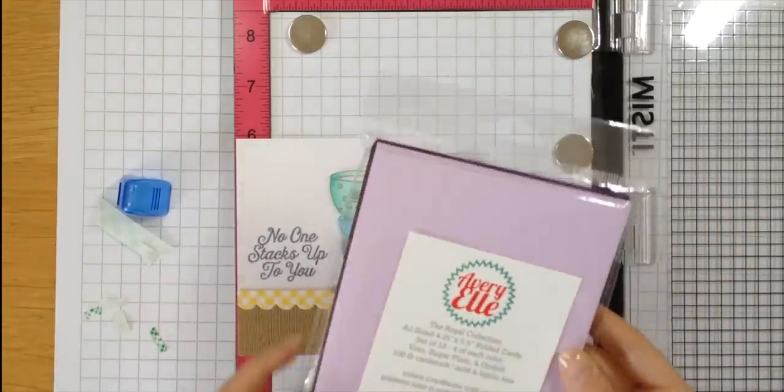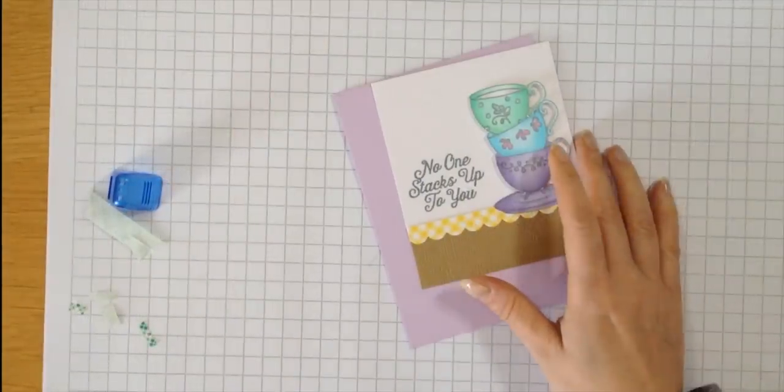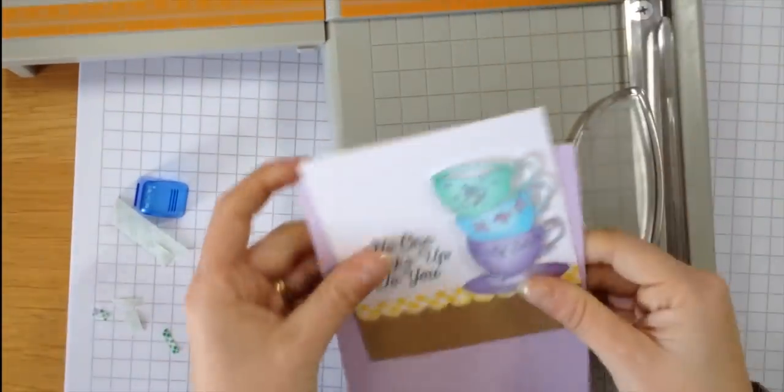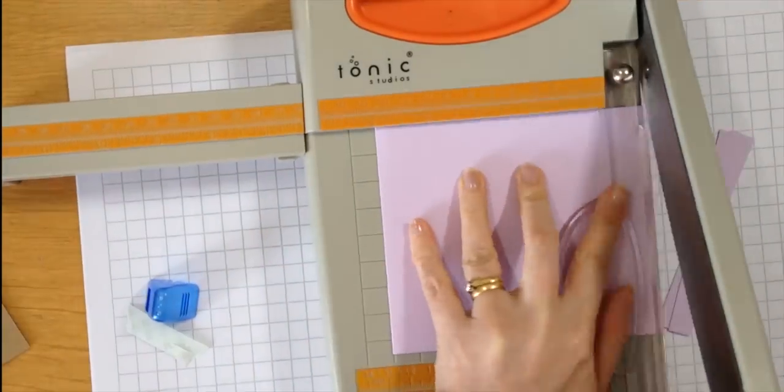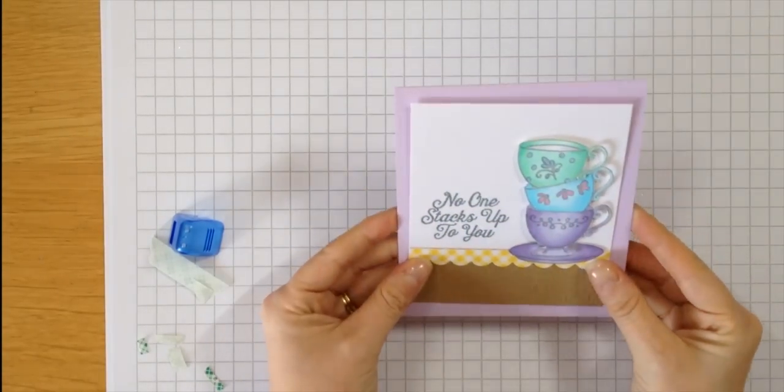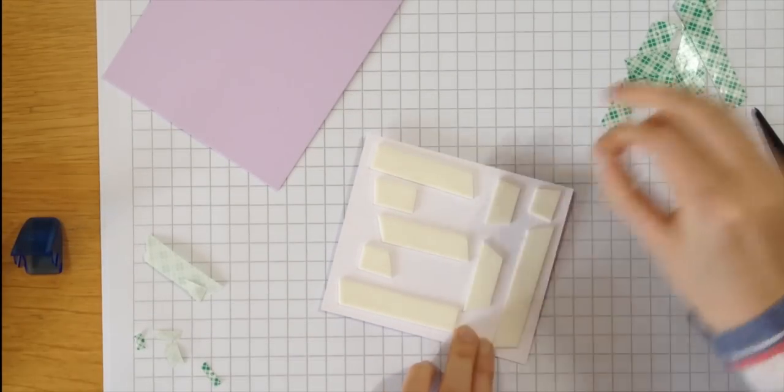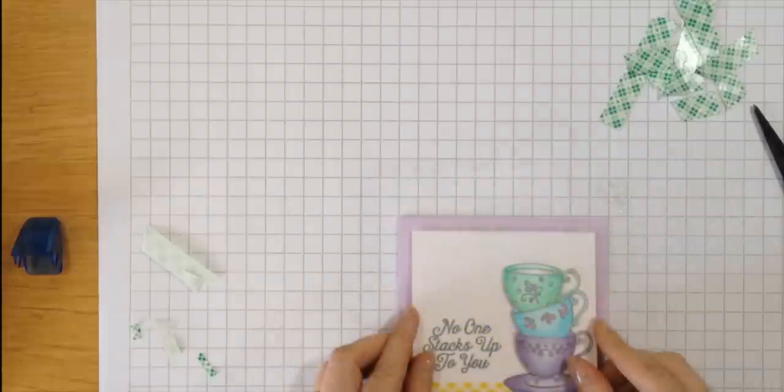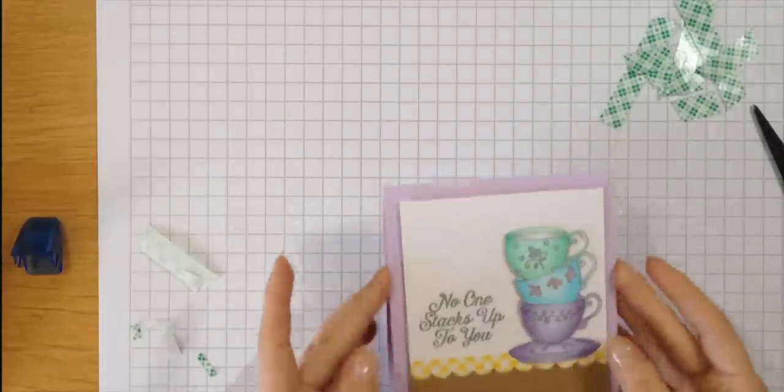To finish off, I'm just taking a note card from the royal collection in the orchid color. The note card is an A2 size and my panel was just a little bit too short. It didn't look quite right on the front of the card, so I've just trimmed off about maybe three-quarters of an inch, half an inch from the bottom. I've just used some foam adhesive for the back and adhered that to my note card, and my card is finished.